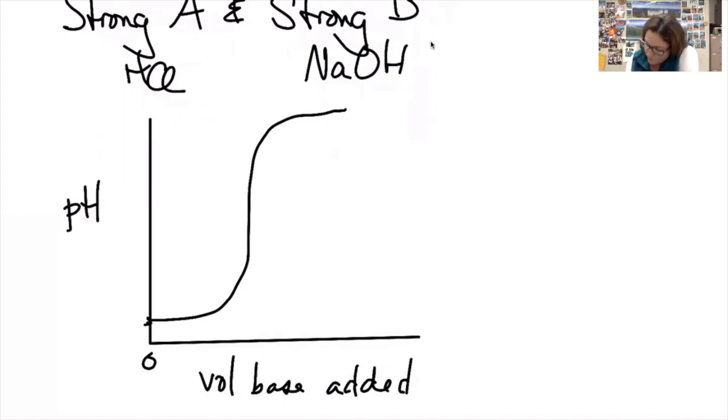At the top, when it rolls over, it's going to roll over somewhere under 14 and approach an asymptote at whatever the pH of the base is.